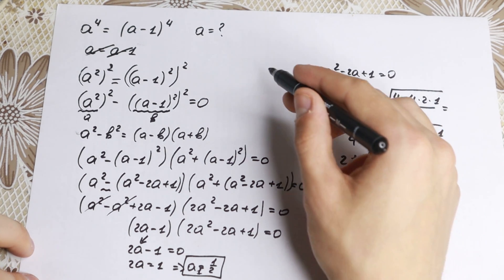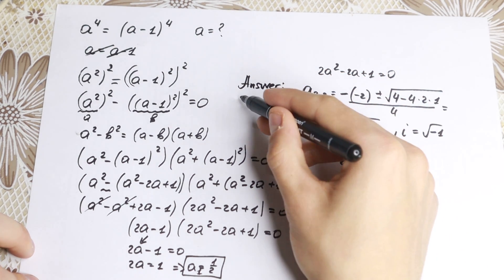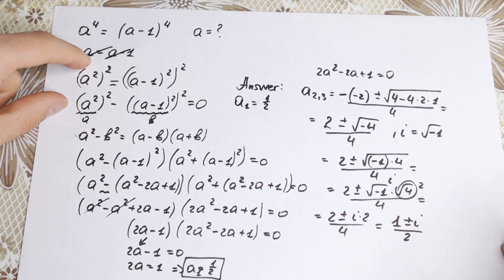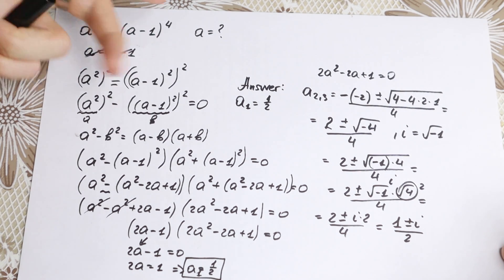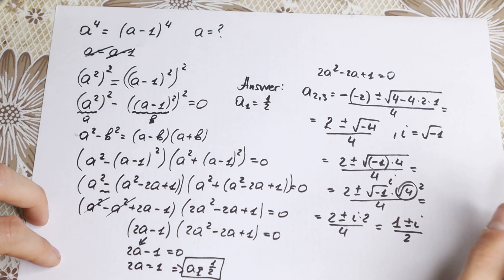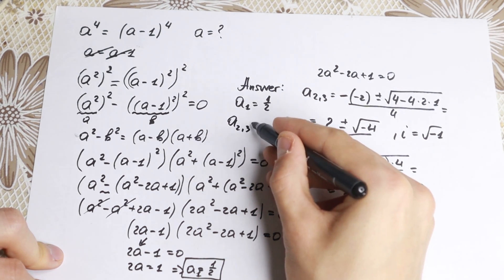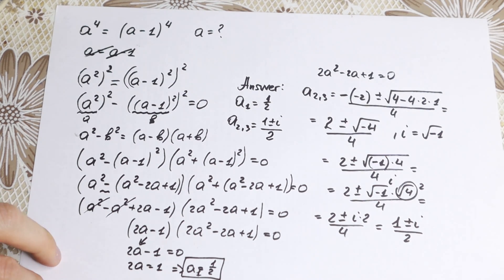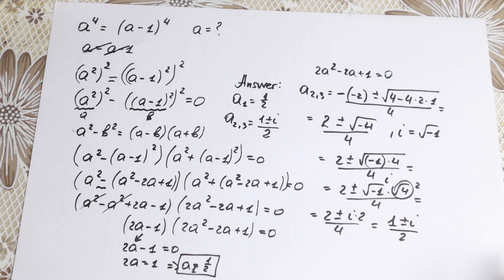So our complete answer is: a₁ = 1/2, and a₂, a₃ = (1 ± i) / 2. These are all three roots of the original equation. If you only used the shortcut method, you would find just a = 1/2 and completely miss the two complex roots.